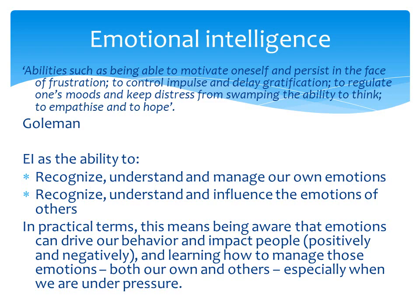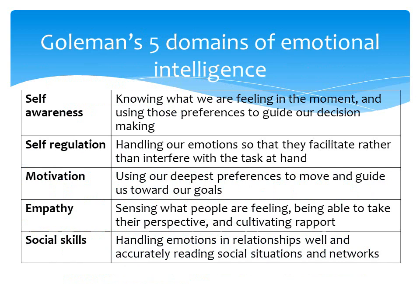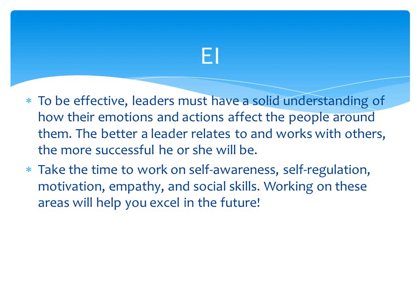Whether called EI or EQ, it's the same concept. Goleman's five dimensions are: self-awareness — knowing what you feel; self-regulation — controlling emotions; motivation — using deepest preferences to move towards goals; empathy; and social skills — handling emotions in relationships. Leaders must understand how their emotions affect people, and the better a leader relates and works with others, the more successful they will be.